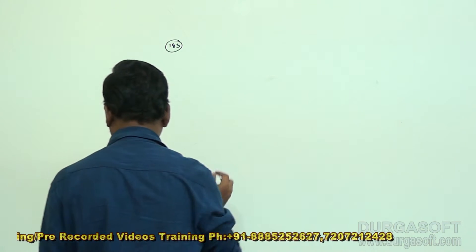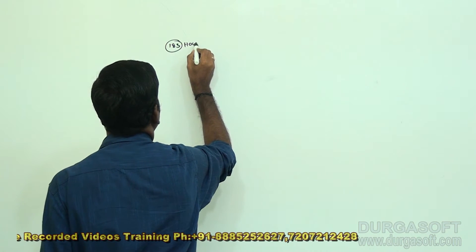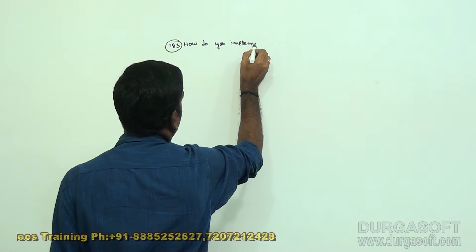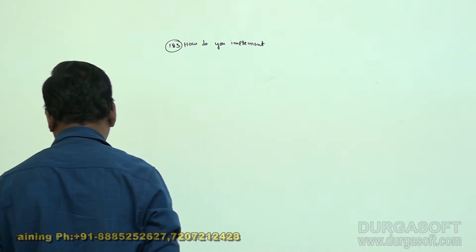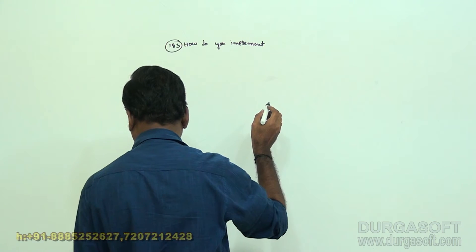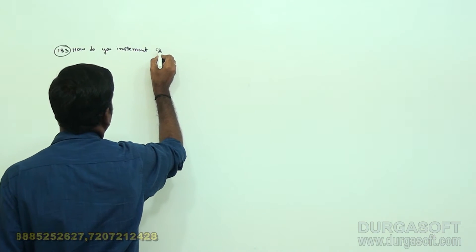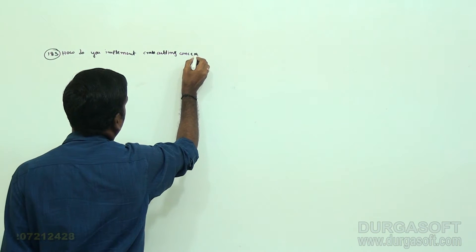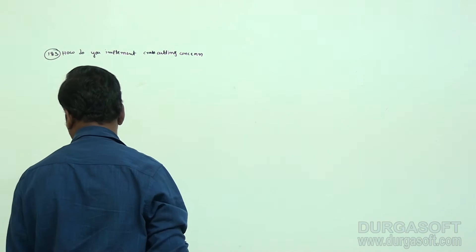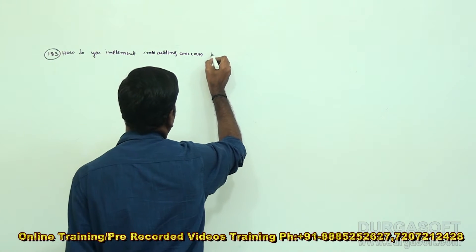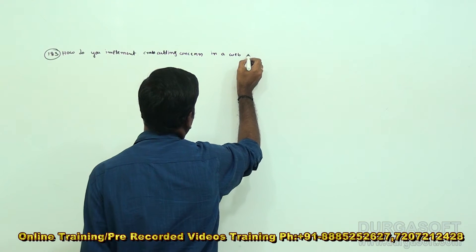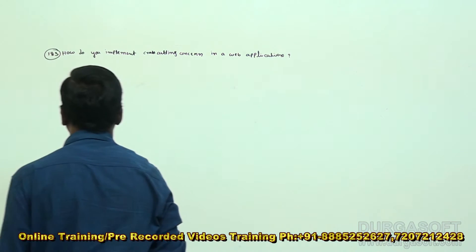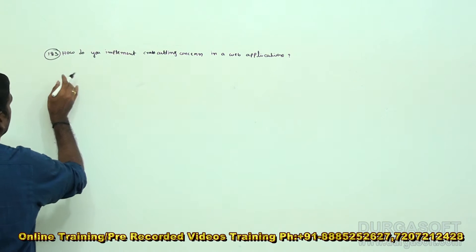Question 183: How do you implement cross-cutting concerns in web applications?